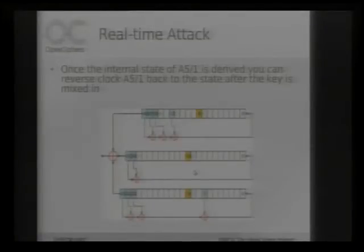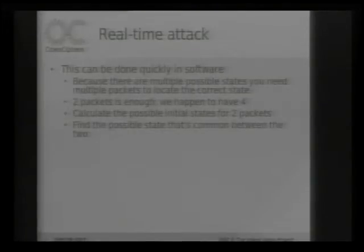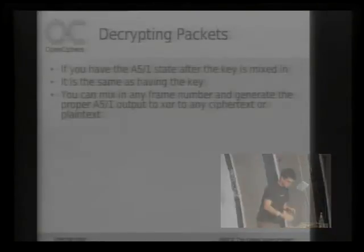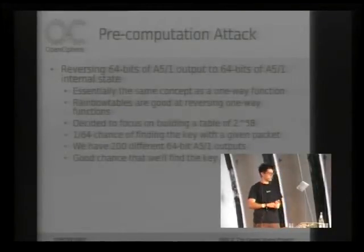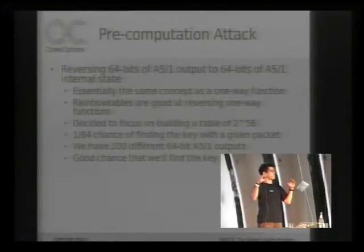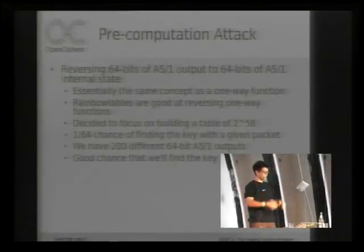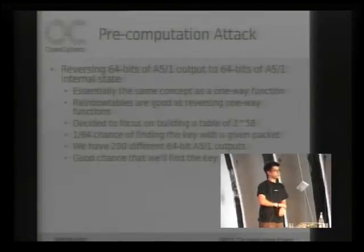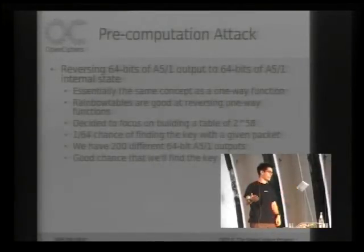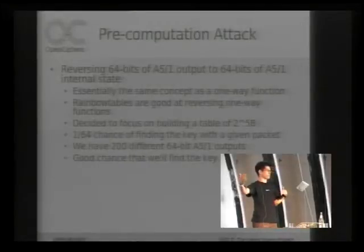This basically covers how to reverse clock the A5/1 registers and narrow down the possibilities using two packets. Moving on to the pre-computation attack: if you have 64 bits of output of A5/1 anywhere in the stream, what we want to do is reverse that back to the internal state of A5/1, so we can run it through the reverse clocking algorithm to get back to the state right after the key. We basically look at this like it's a one-way function, similar to LM or any sort of password hashing function, where we're trying to reverse back from the output to the internal state.